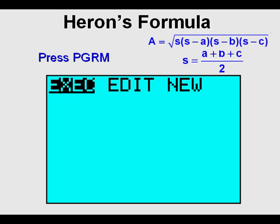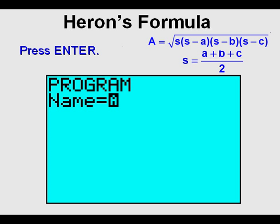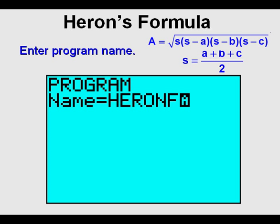If you don't have any programs already, this is what your view screen will look like. Arrow twice to the right — New is highlighted, and Create New is option 1, which is our only choice here. Press Enter. You will see the alpha input cursor blinking. Enter the name of the program you want to use — you can use 8 characters maximum. I chose HERON F for Heron's formula.